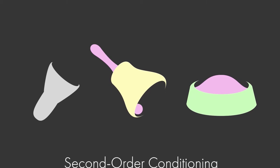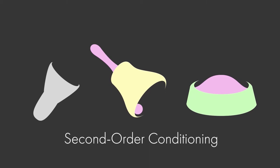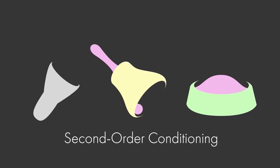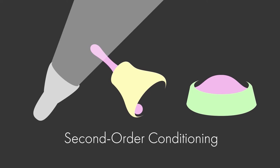This sequence is called second-order conditioning, a procedure in which a neutral stimulus — here the light — is paired with some already established CS, like the bell.